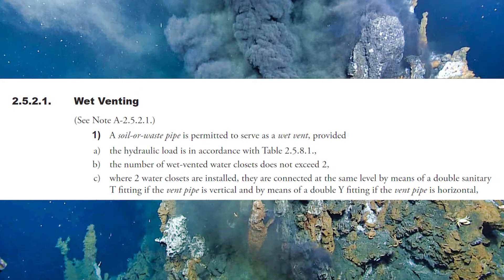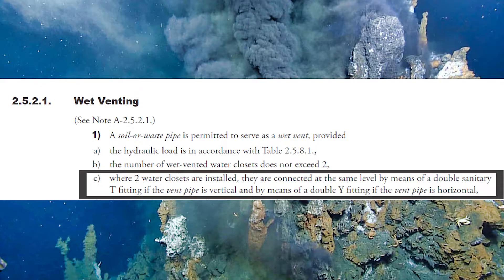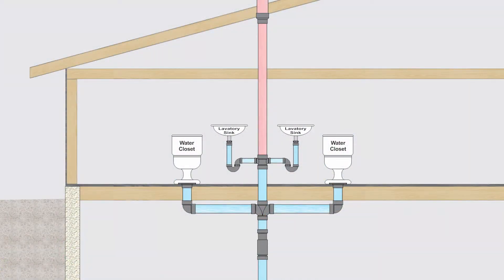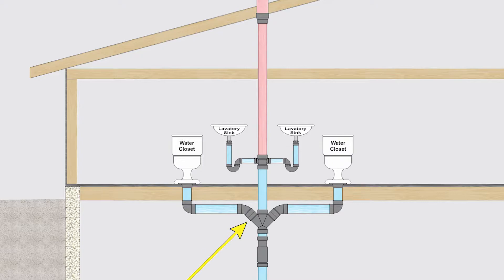Next, clause 2521.1c: where two water closets are installed, they are connected at the same level by means of a double sanitary T fitting if the vent pipe is vertical, and by means of a double Y fitting if the vent pipe is horizontal. For two water closets joining into a vertical pipe, you can use a double TY as shown in this picture. However, I caution against this because of a bridging effect — sewage from one water closet trap arm can travel across into the other under high flow. To counteract this, you can use a double Y fitting with two 45s connecting the trap arms, as shown here.